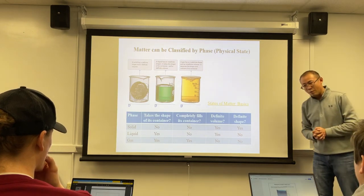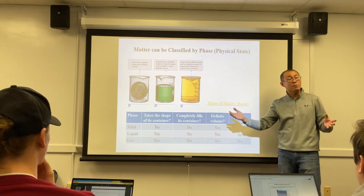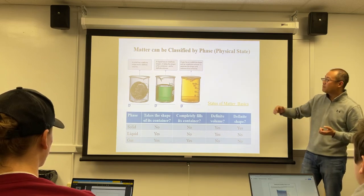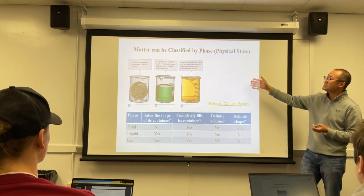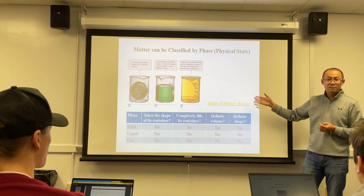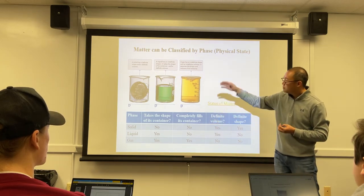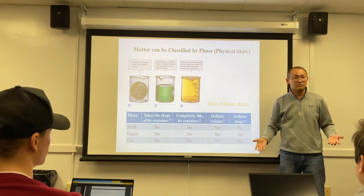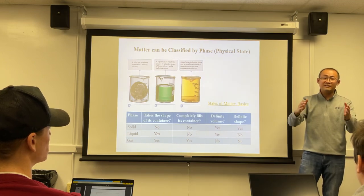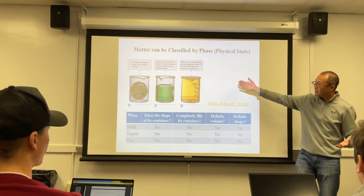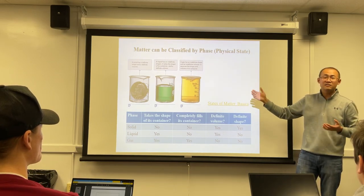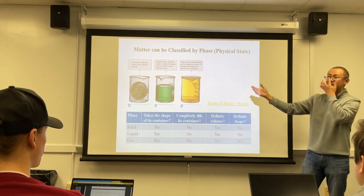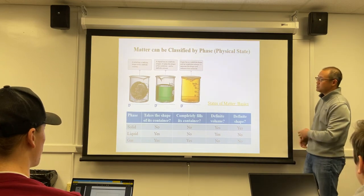When we study matter, we classify it because there are so many forms. The first type of classification is by physical state: solid, liquid, and gas. The air we breathe is a gas. Air is a gaseous matter. We classify matter by state because of how they exist in nature, and classification lets us understand what is unique about each state and the differences between them.